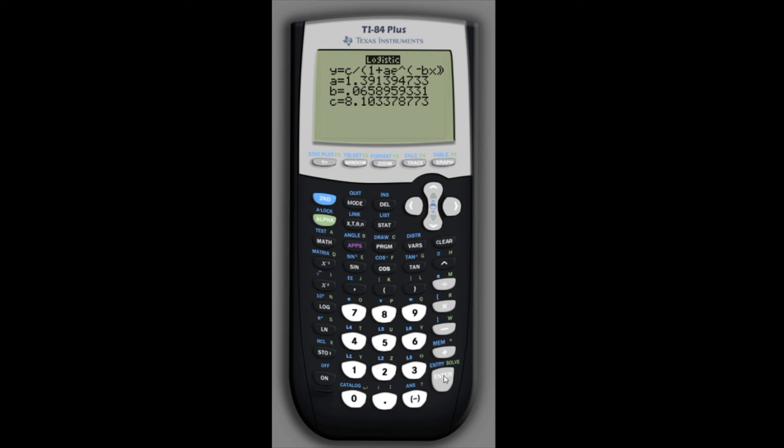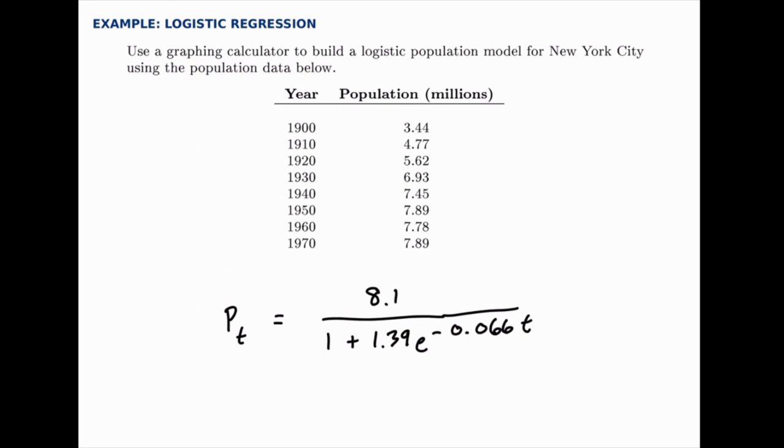e to the power of negative b x but we're using t instead. So we'll use negative 0.066 times t and there it's written the way that we're familiar with. So we're just filling in the values for a, b, and c in this model and that's the model that was built by logistic regression.